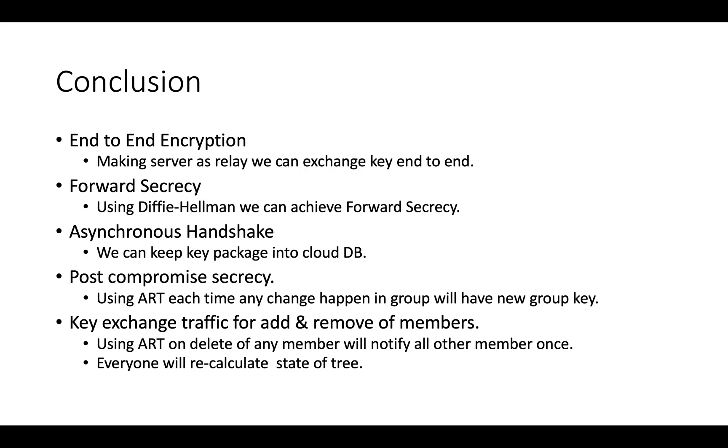So, here is the conclusion of entire session. MLS has solved five major problems: End-to-end encryption, Forward secrecy, Asynchronous handshake, Post-Compromise secrecy, Key exchange traffic for add and remove of members. There are many more things for you to explore in IETF draft of MLS. Like, why MLS is called double ratchet? How MLS derive a new key for every single message? How double ratchet increase forward secrecy? What is welcome, proposal, commit messages?